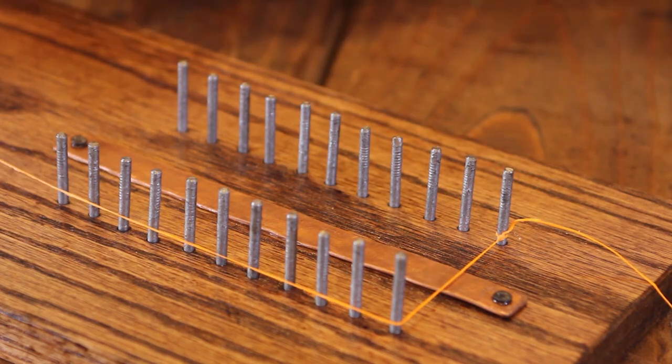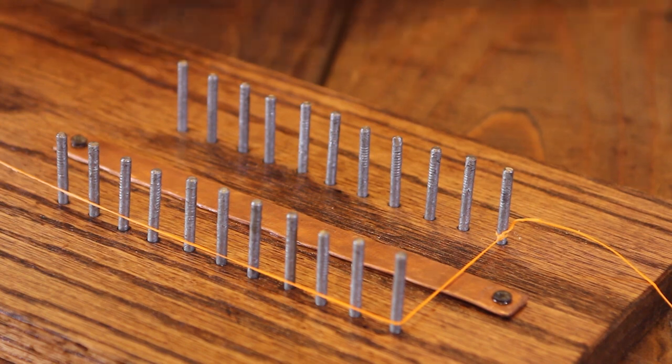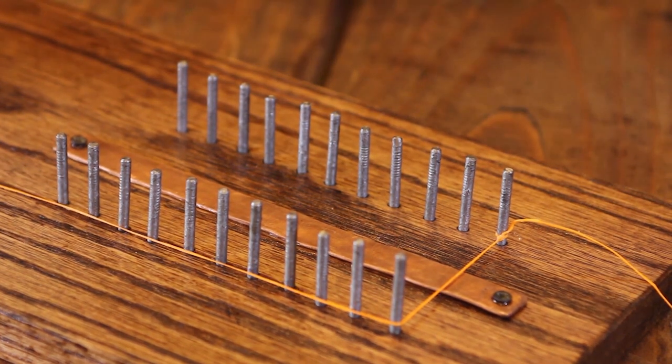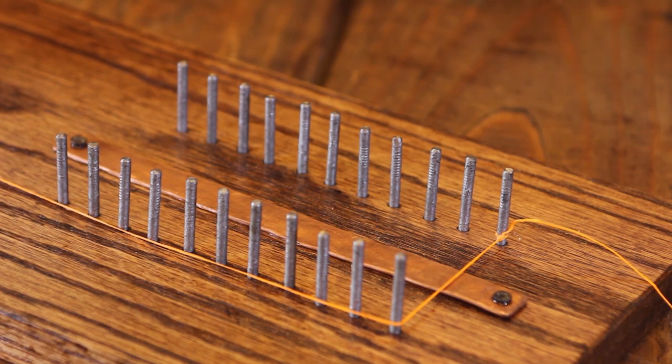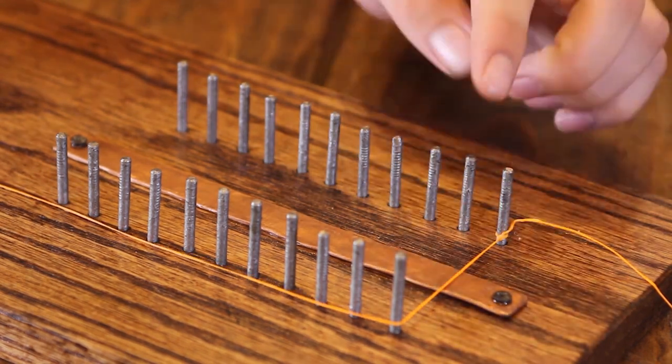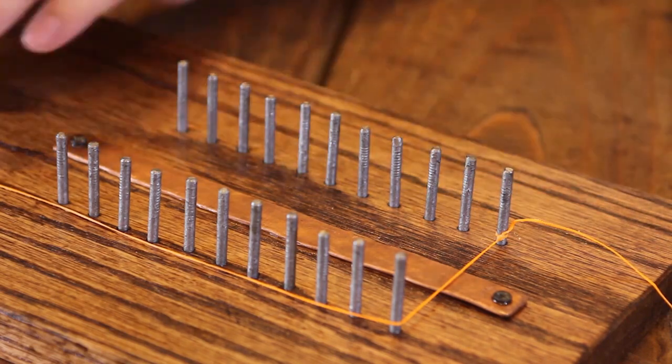So if I have a bowstring that needs 12 strands total, that means I need two bundles of six. So I would go down each one of these for six.